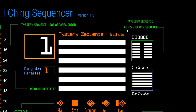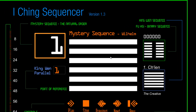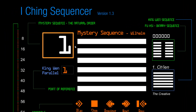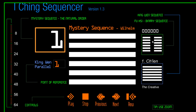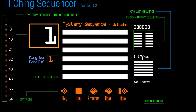There's another system of arrangement called the Fuxi or binary sequence, which any computer programmer would appreciate. It's interesting to note that in the Fuxi binary sequence, its starting hexagram is exactly opposite the starting hexagram of both the mystery sequence and the King Wen parallel — they're all broken, all yin, all yang.